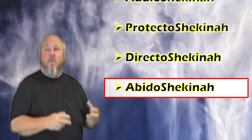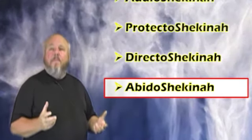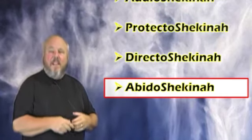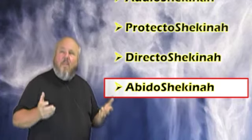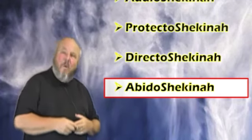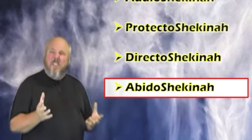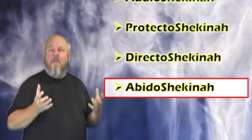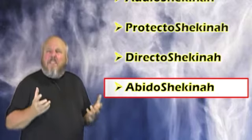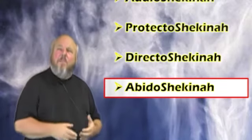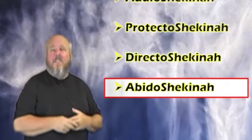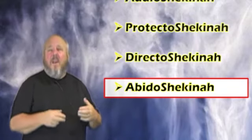Then there's the abido shekinah cloud, which dwelt between the cherubim above the mercy seat of the ark of the covenant. These clouds are the manifest presence of Yahweh — the tangible presence of the maker of heaven and earth, a visible expression of the invisible God. The appearance of these clouds is unpredictable.